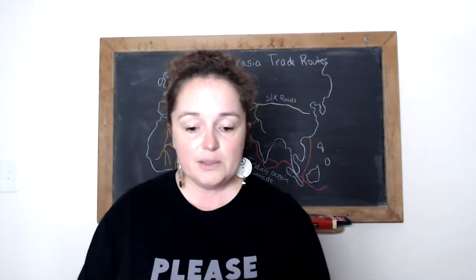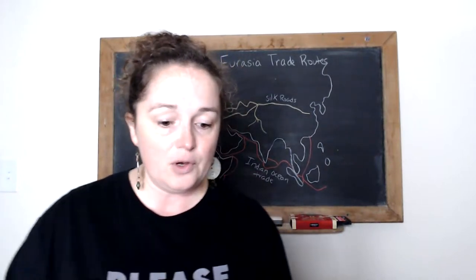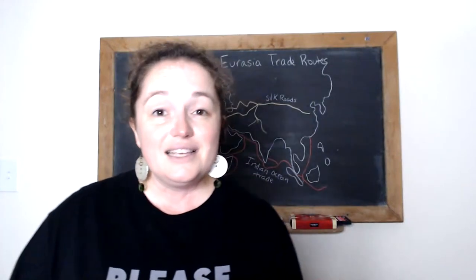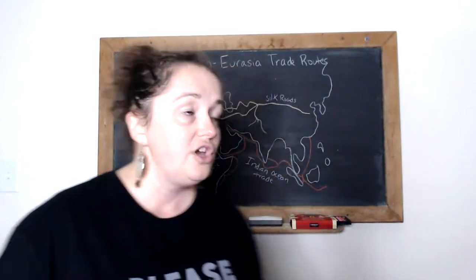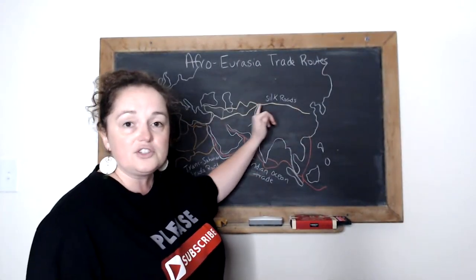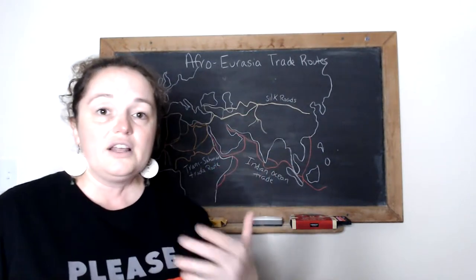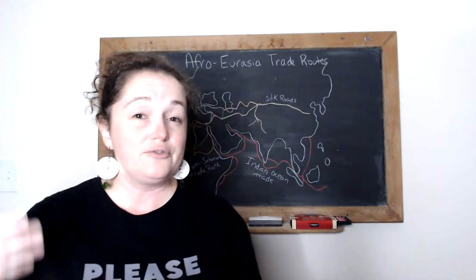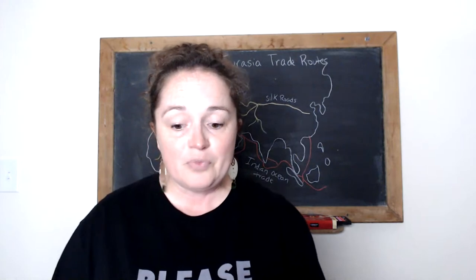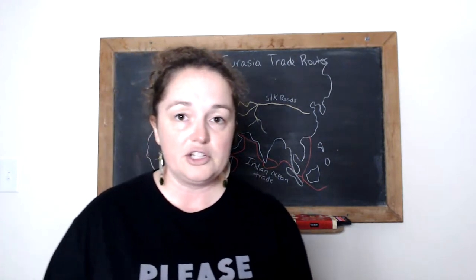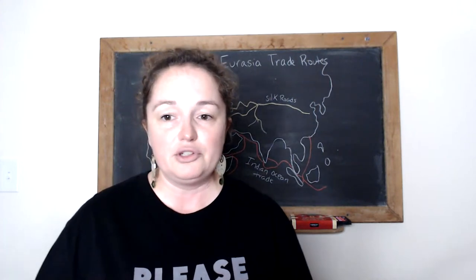The first vocab word is Caravan Sarai. Basically it's an inn along the trade route where travelers can trade, rest, and replenish. Remember I told you about the little towns that start springing up along the Silk Road — this is the name for the inn. It's kind of like a pit stop in their journey.